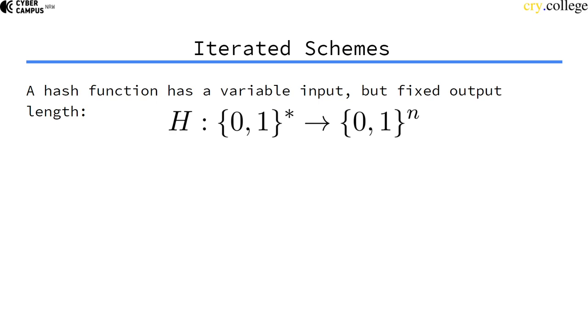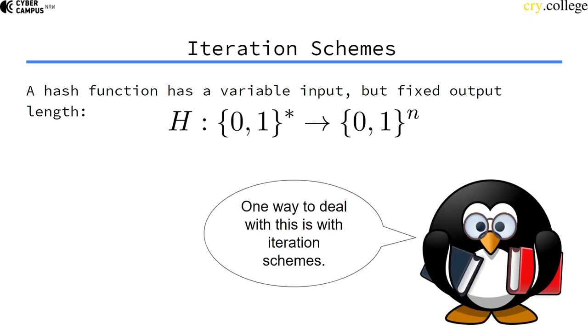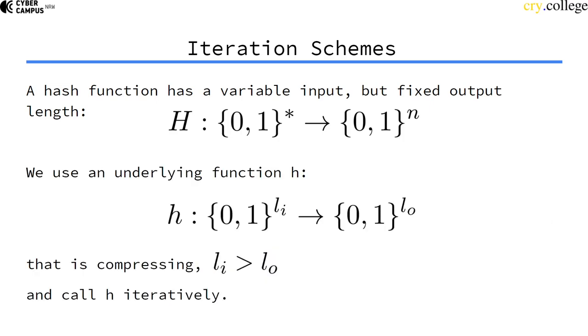So one common way to deal with this is to construct an iteration scheme and to use an underlying compression function. So a compression function takes a fixed sized input and a fixed sized output but the fixed sized input is longer than the output. And then we call H iteratively.